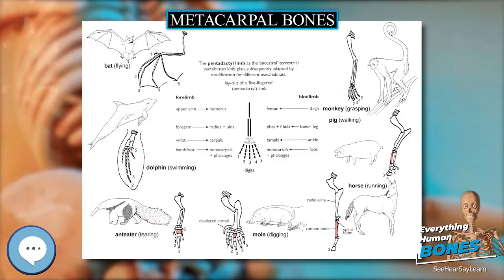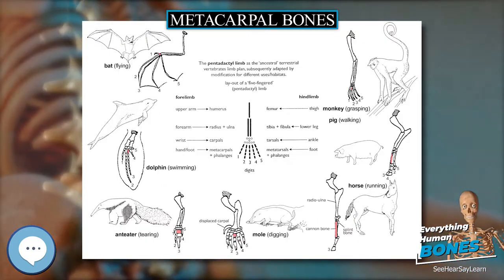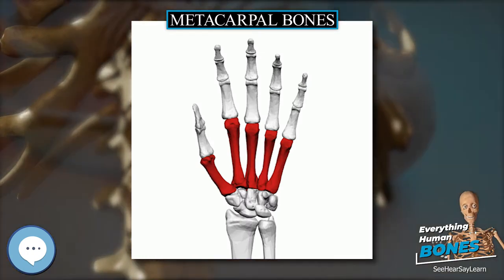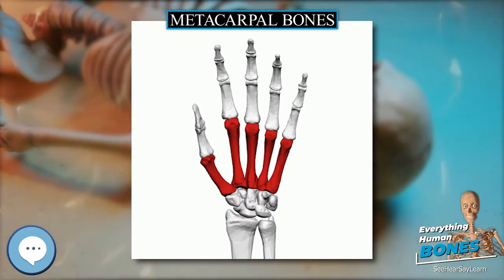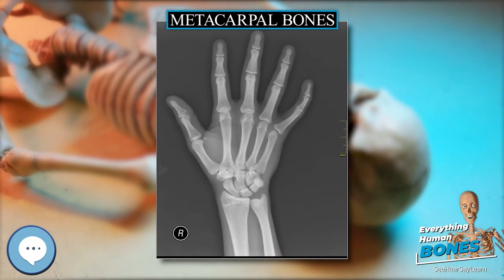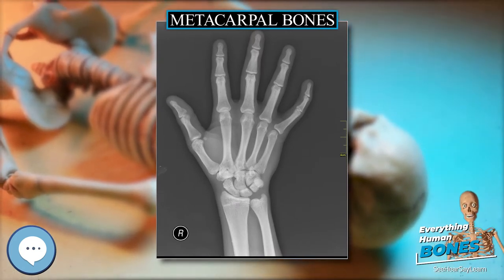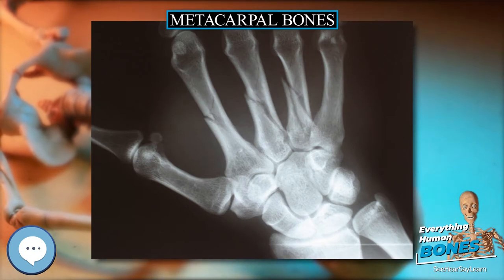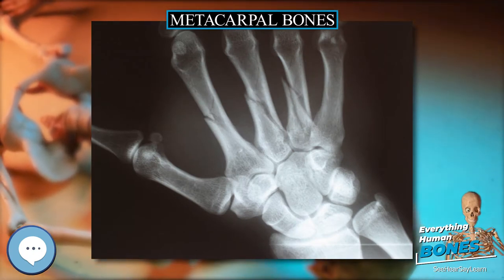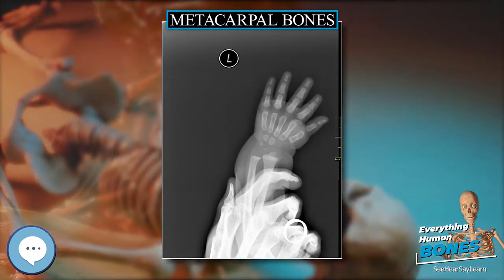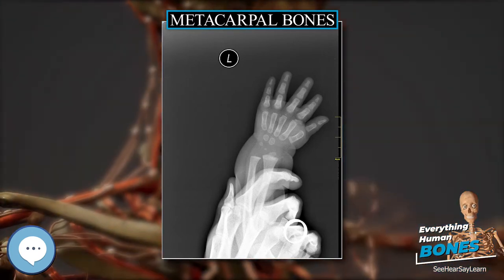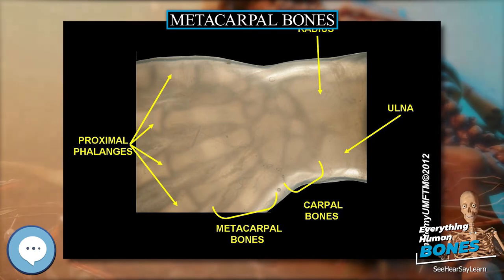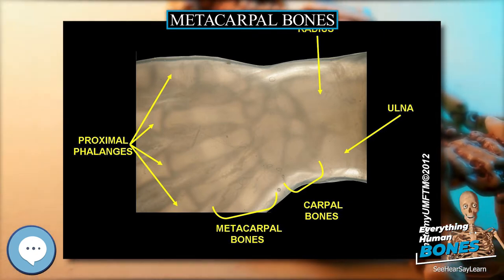The middle metacarpals are tightly united to the carpus by intrinsic interlocking bone elements at their bases. The ring metacarpal is somewhat more mobile, while the fifth metacarpal is semi-independent. Each metacarpal bone consists of a body or shaft and two extremities: the head at the distal or digital end near the fingers, and the base at the proximal or carpal end close to the wrist. The body or shaft is prismoid in form and curved so as to be convex in the longitudinal direction behind and concave in front, presenting three surfaces: medial, lateral, and dorsal.